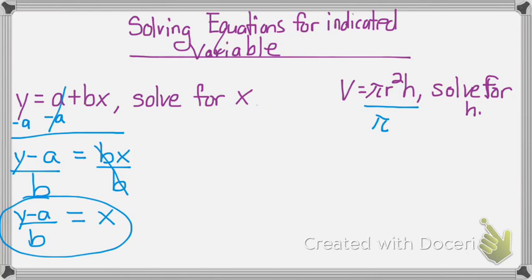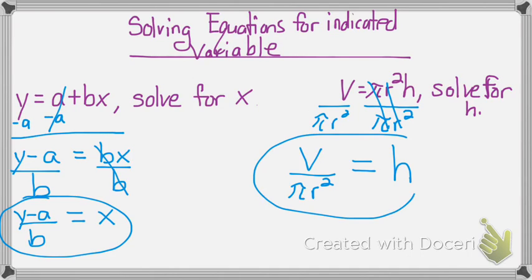It's okay to divide by more than one thing at a time. So, you can divide by both pi and r squared on both sides. That cancels that out, and now I'm left with h. I am done because it's set to solve for h, so h equals V over pi r squared.